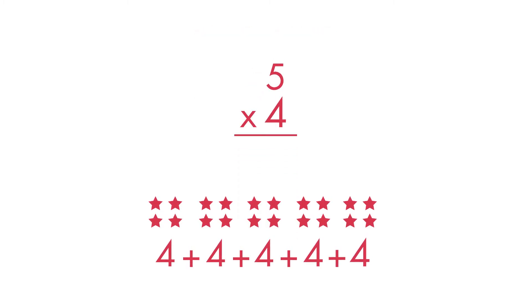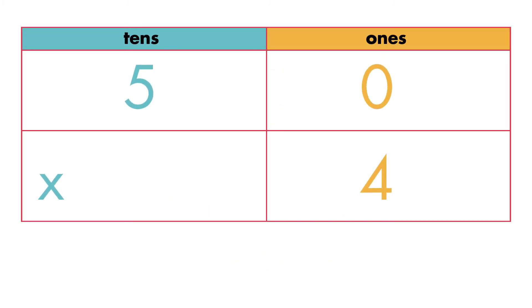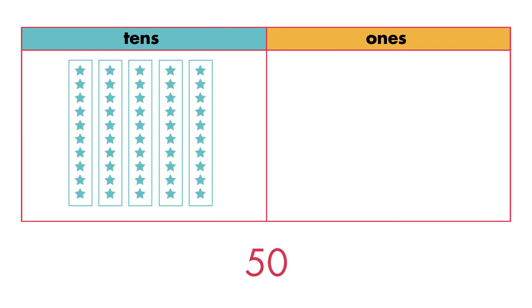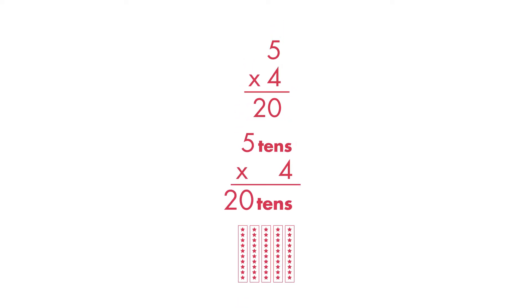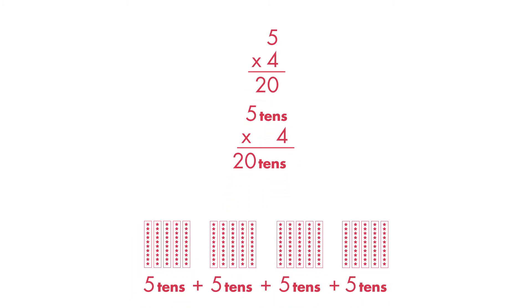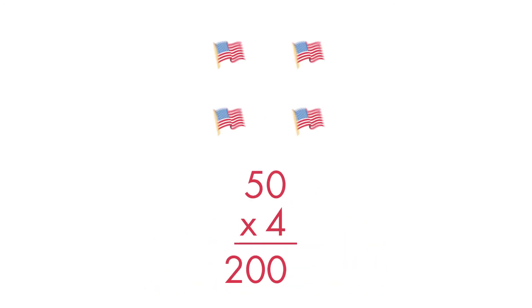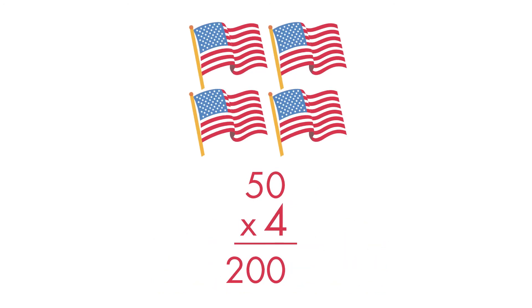5 times 4 is equal to 20. Let's use that math fact to solve 50 times 4. 50 is the same as 5 tens. If 5 times 4 is equal to 20, then we know 5 tens times 4 is equal to 20 tens. 4 groups of 5 tens are equal to 20 tens, or 200. There are 200 stars on 4 US flags.